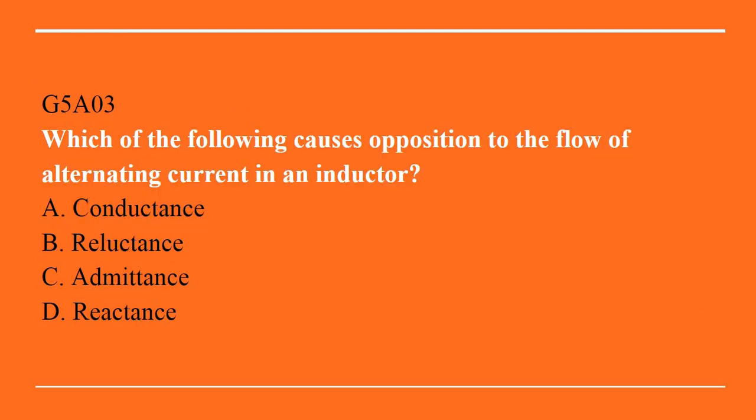G5A03: which of the following causes opposition to the flow of alternating current in an inductor? A. Conductance. B. Reluctance. C. Admittance. Or D. Reactance. Answer is D: reactance.